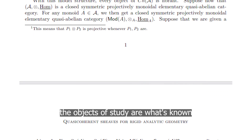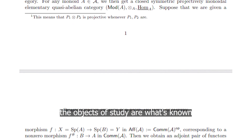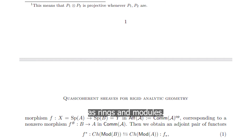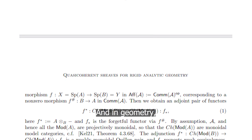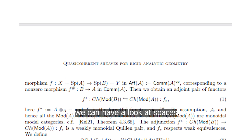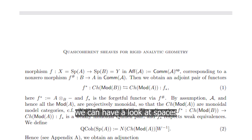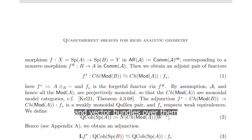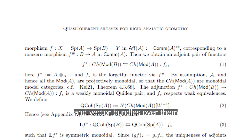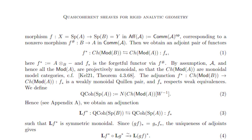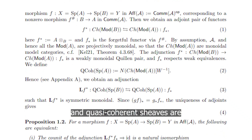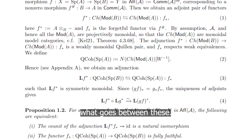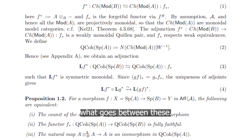In algebra the objects of study are what's known as rings and modules, and in geometry we look at spaces and vector bundles over them — and quasi-coherent sheaves are what goes between these.